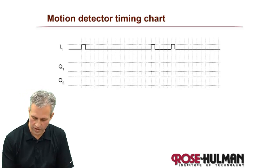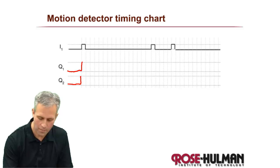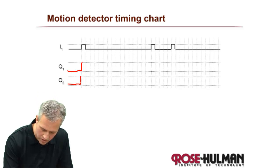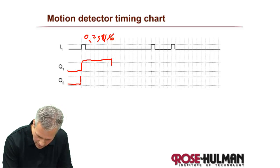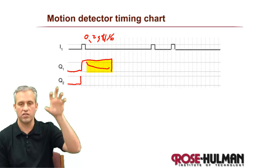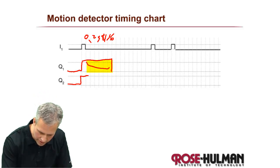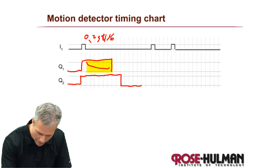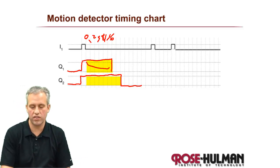Working through the timing chart: both Q outputs start low. As soon as there's motion, they both kick on. When motion stops, you have six seconds until the warning light goes off — that's the off delay. Then you get an additional two seconds beyond that before the main lights go off.